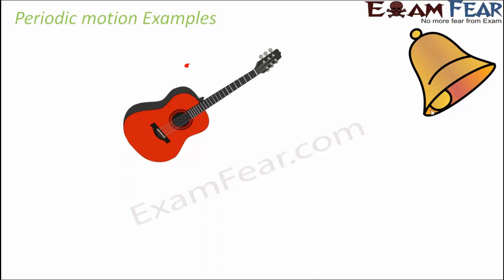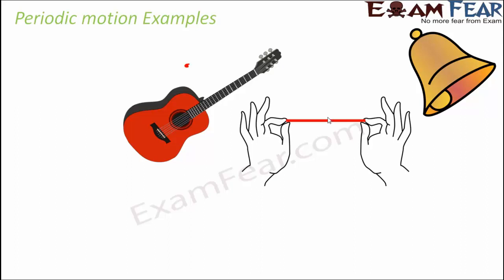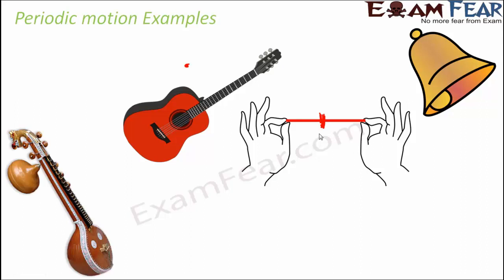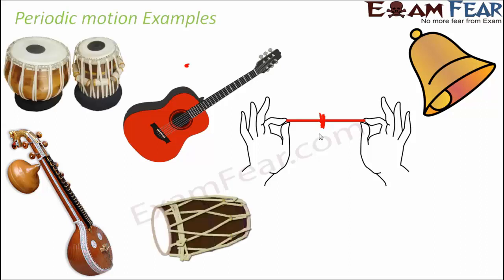A school bell or Christmas bell, when struck, keeps vibrating back and forth — that is periodic motion. A rubber band, when plucked, vibrates in a similar fashion. Many musical instruments exhibit periodic motion in the form of vibration: the tabla, the dholak, the flute — vibration is nothing but periodic motion where the movement repeats itself continuously.